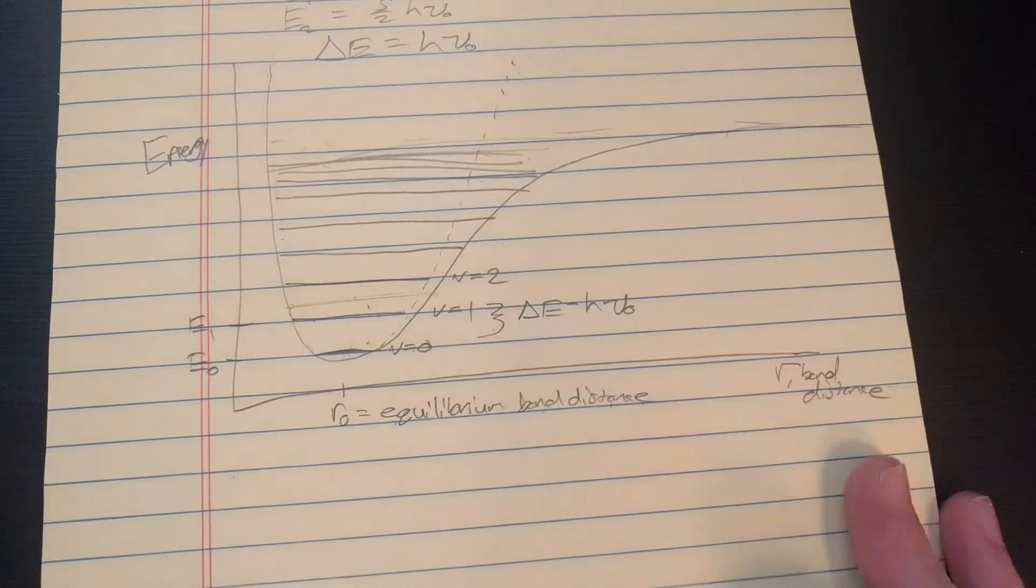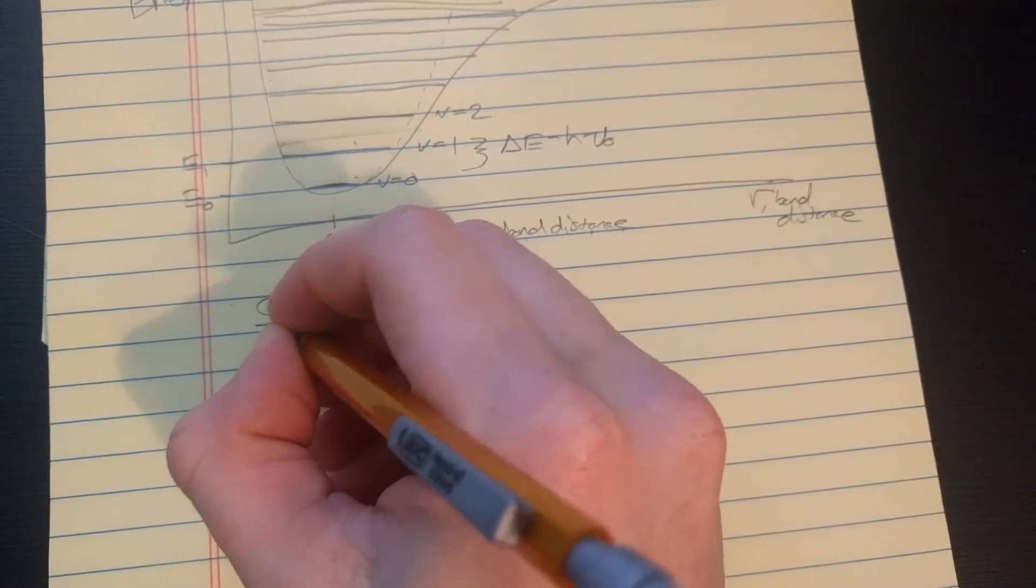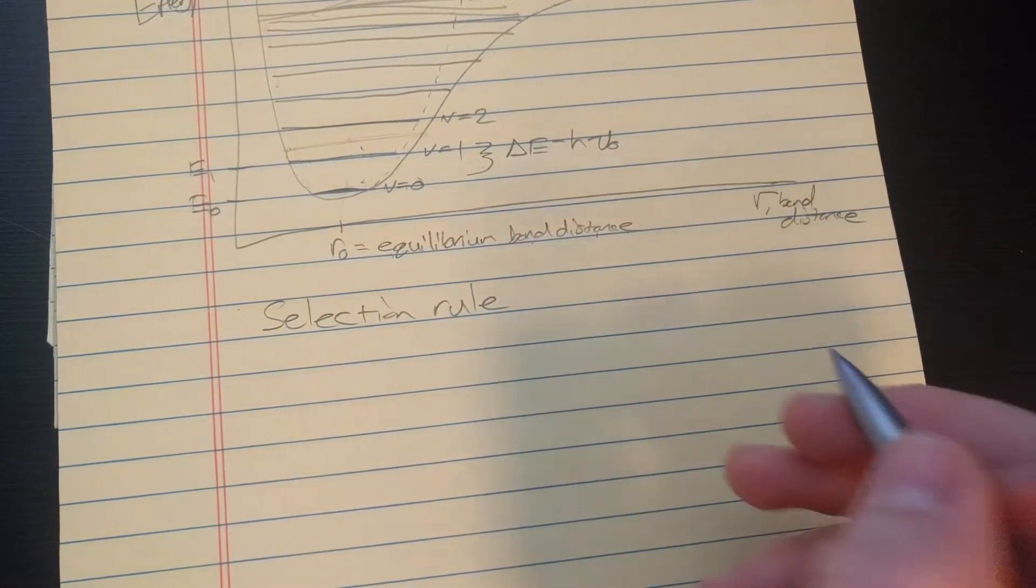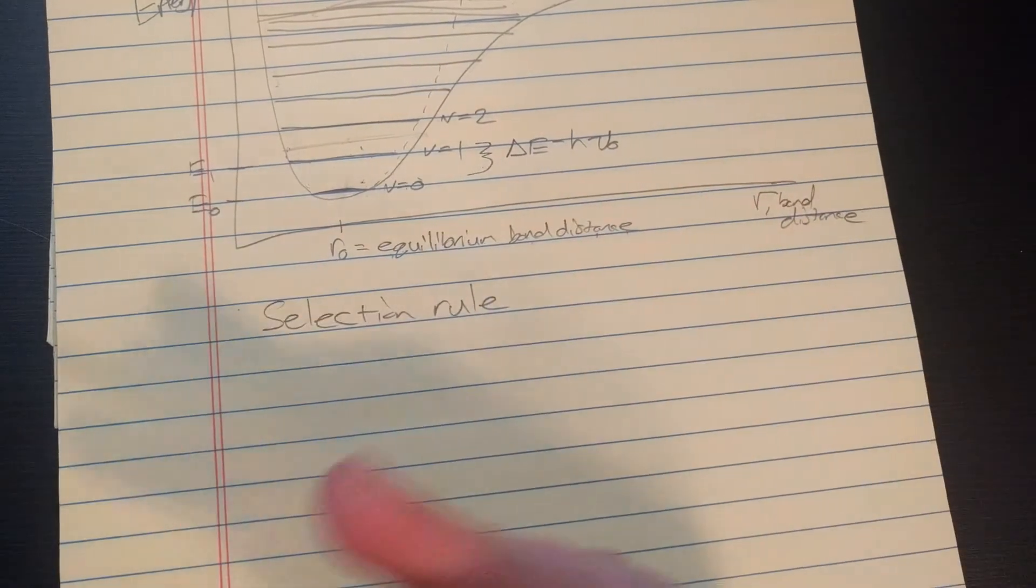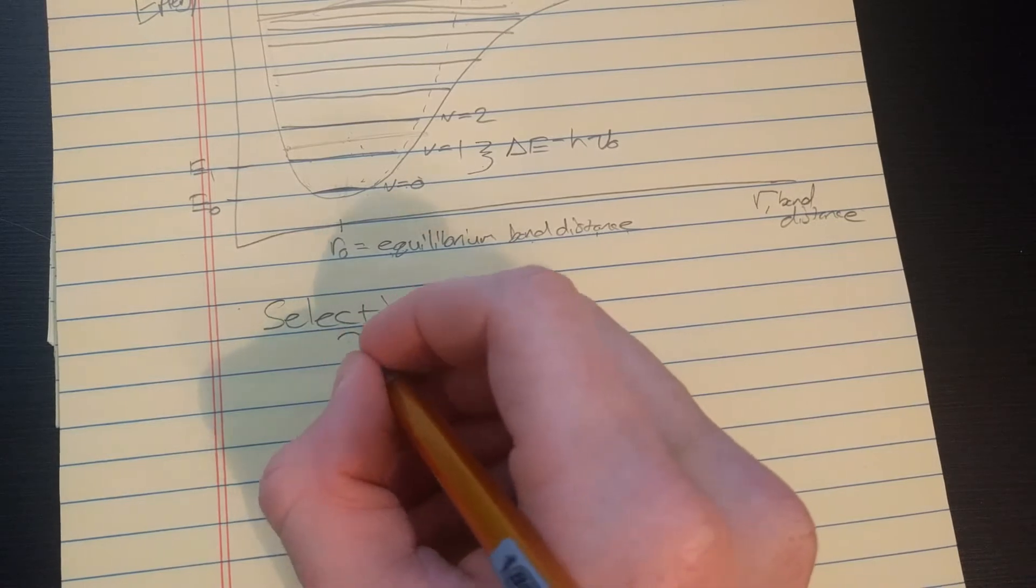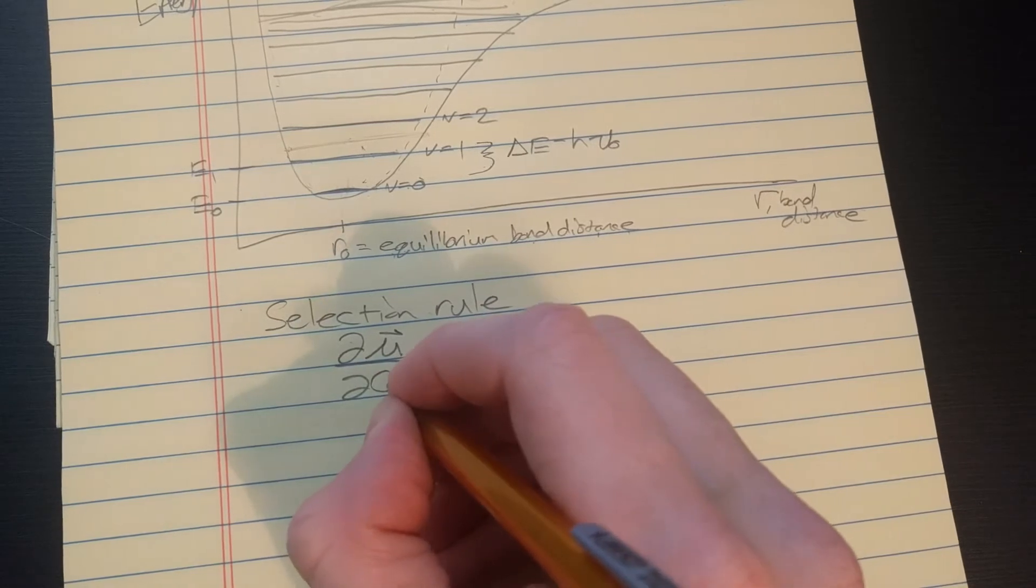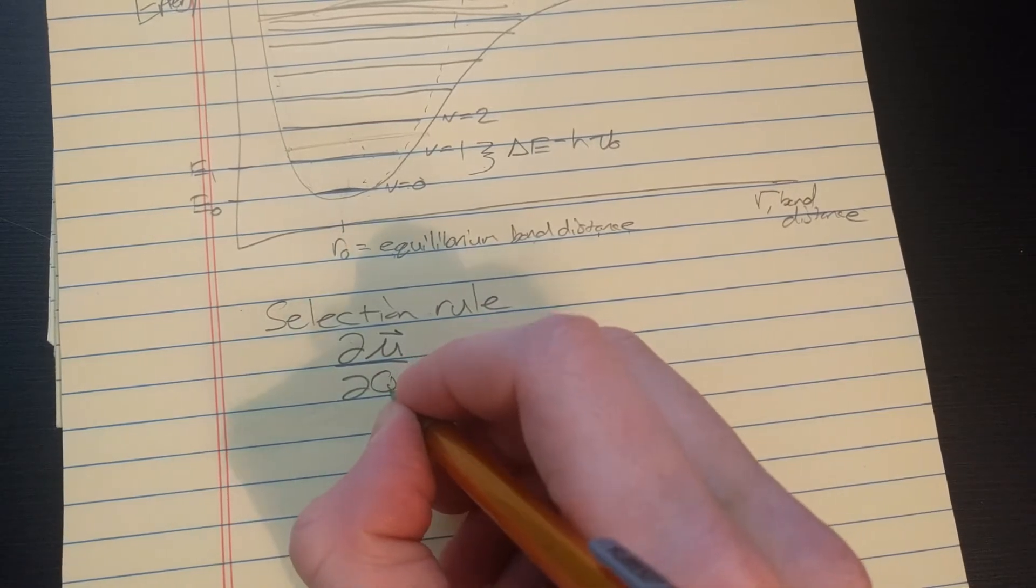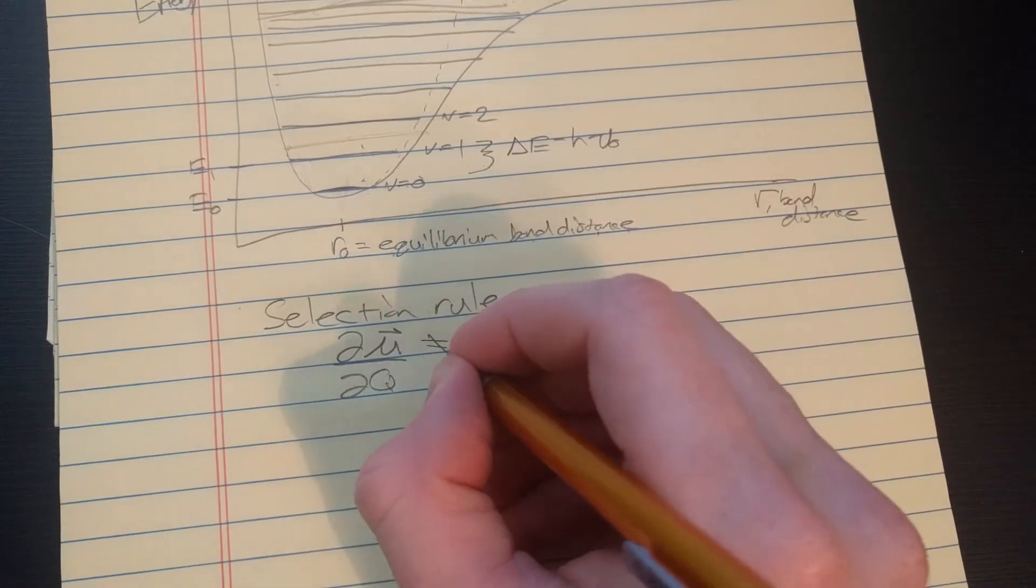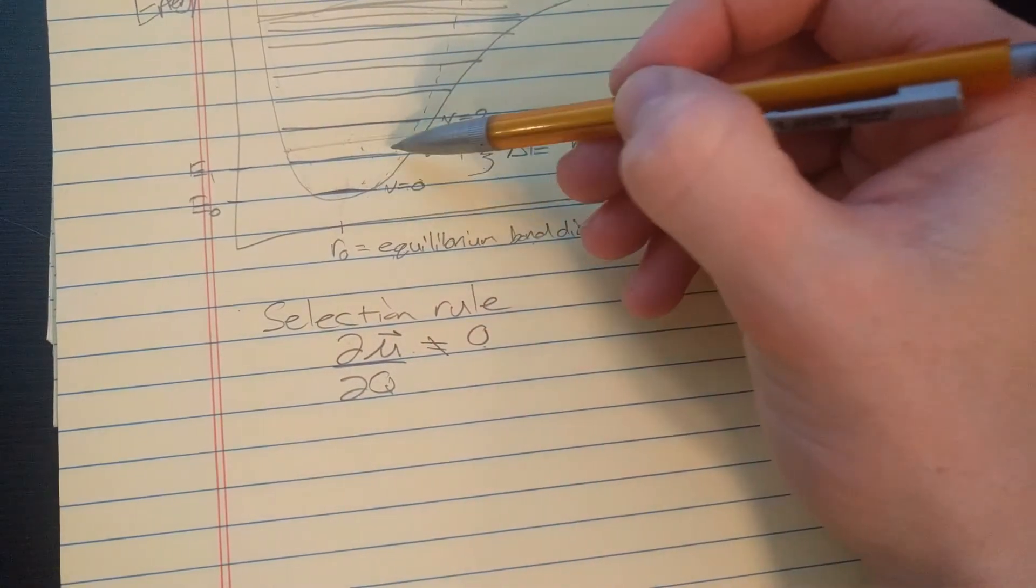And, there's things called selection rules in vibrational spectroscopy. And, the selection rules for infrared spectroscopy are that the dipole of the molecule must change. So, essentially, you can write that in a math form that says the change in the dipole moment with the change in the normal coordinate Q, which you can kind of think of as the bond distance R, must not be zero. It has to have some value to go between one state and another.